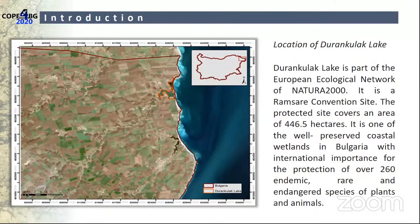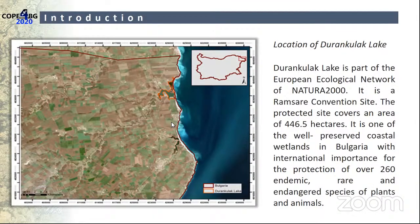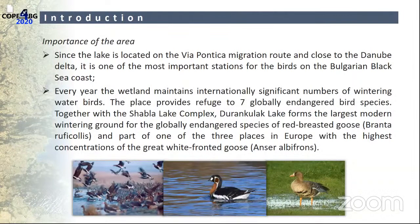The Durankulak Lake is located in the eastern part of Bulgaria. It is a coastal lagoon, part of the European ecological network Natura 2000, and also a Ramsar site — a zone of international wetland importance. It covers 446 hectares and is an extremely important habitat for protected and endangered species. It is located on the Via Pontica bird migration route along the Black Sea coast, making it one of the important bird protection areas in the region.